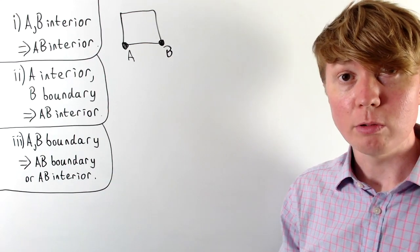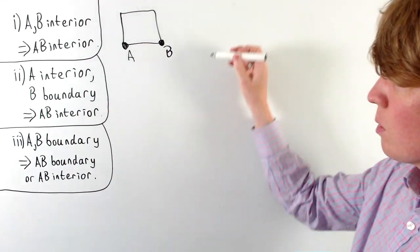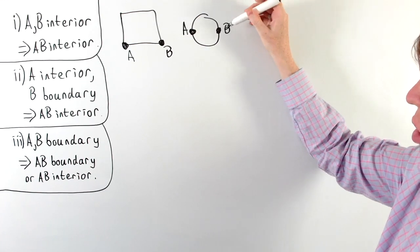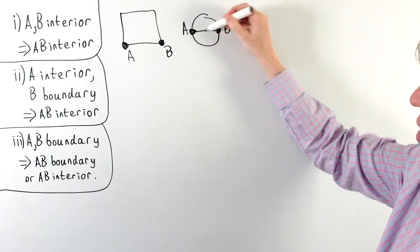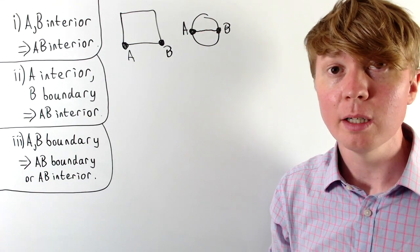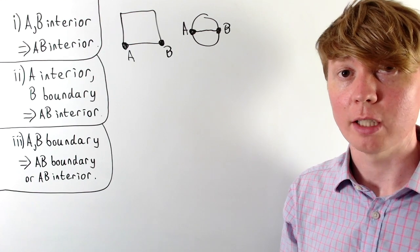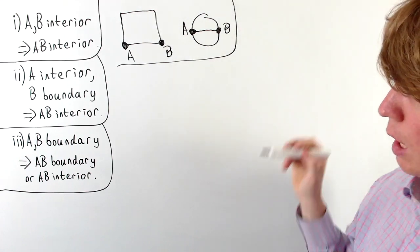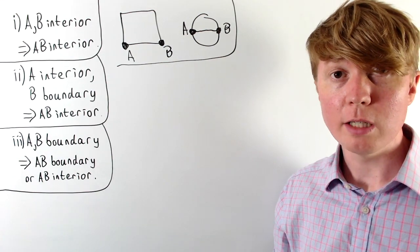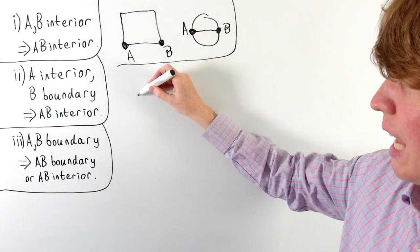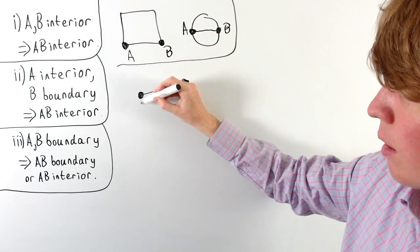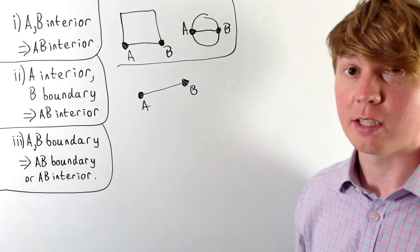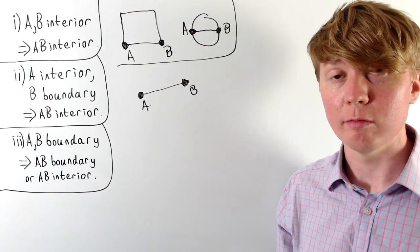The second outcome is that all the points between A and B are interior points. This is the more familiar picture where A and B are on the boundary of our convex set, and every point on the line segment between them is an interior point. To prove these are the only two possible outcomes, consider the case where there are no interior points on AB. There won't be any exterior points either, because A and B belong to the convex set and the line segment AB is contained within it.